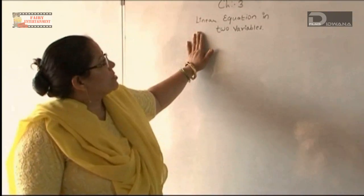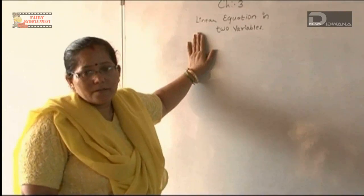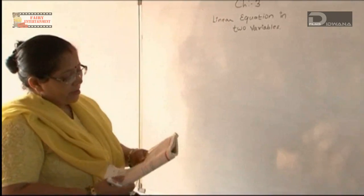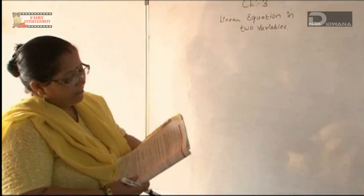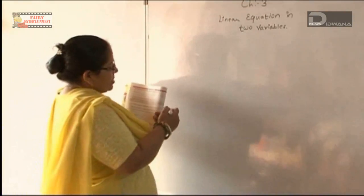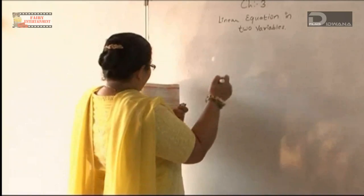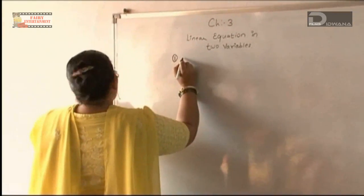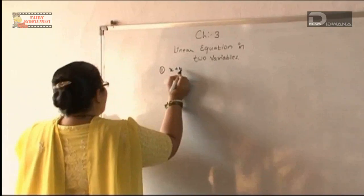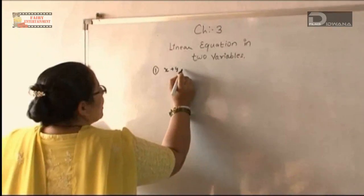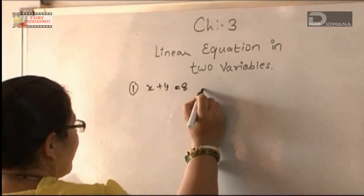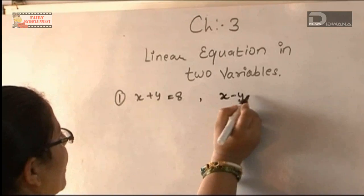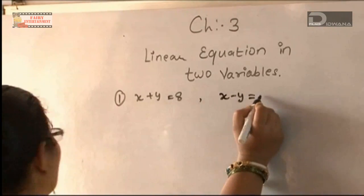We start with a linear equation of two variables. Two equations are given and we need to solve the system by the graphical method. The first equation is x plus y equal to 8, and the other equation is x minus y equal to 2.